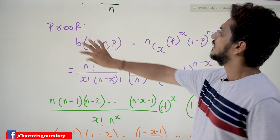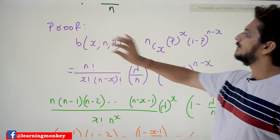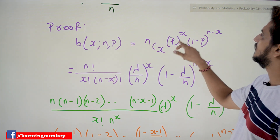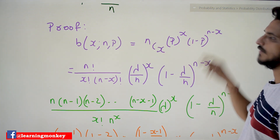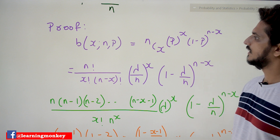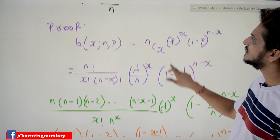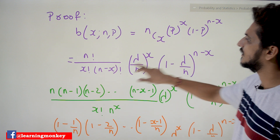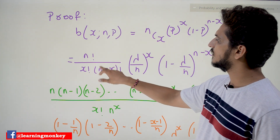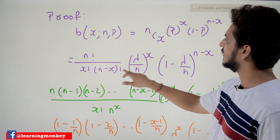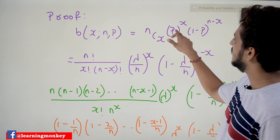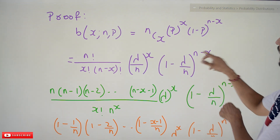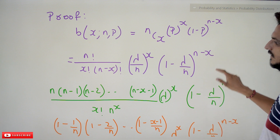Coming to the proof: binomial distribution B(x; n, p) is given as nCx · p^x · (1−p)^(n−x). In place of p we substitute λ/n, so nCx is written as n!/[x!(n−x)!], with p replaced by (λ/n)^x and (1−λ/n)^(n−x).